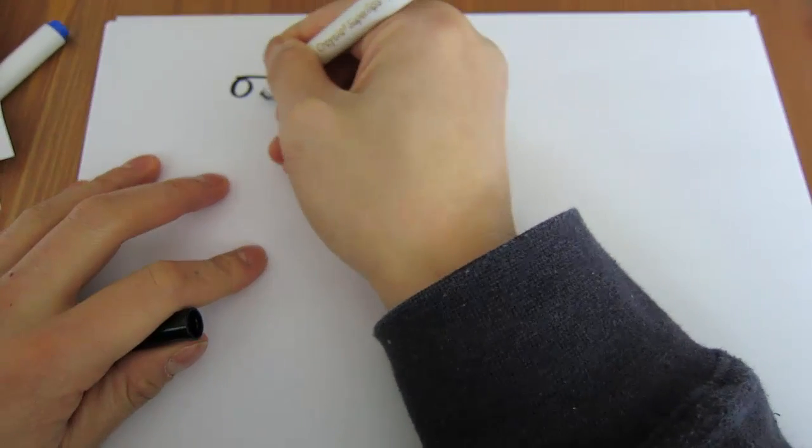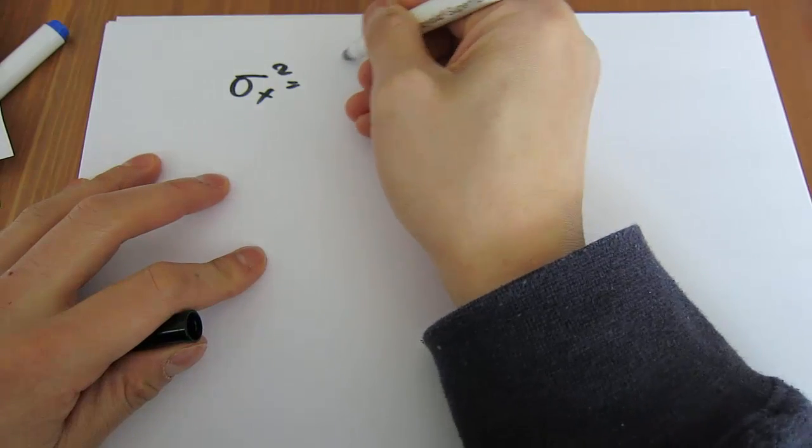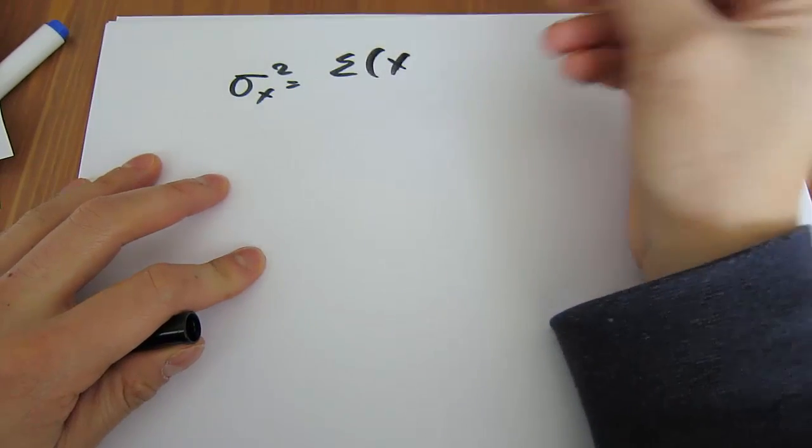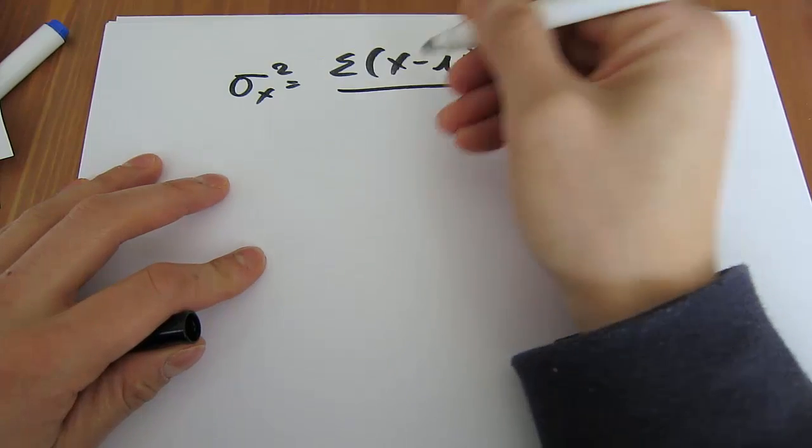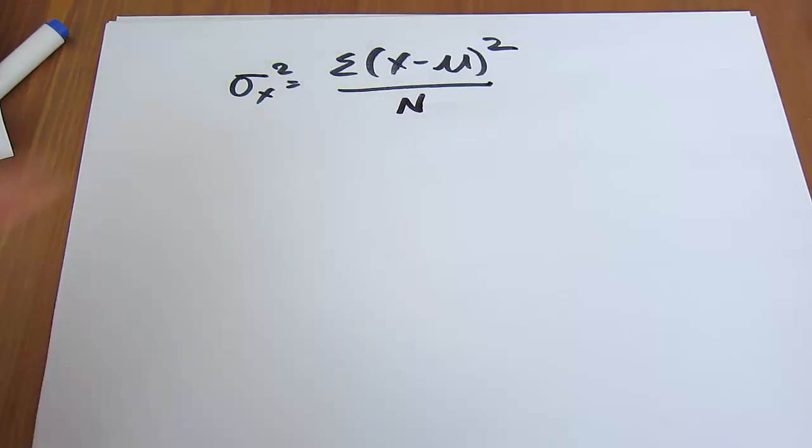Recall that the variance formula looks like this: sum up each observation x minus its mean μ, square it, and then divide by population size N.